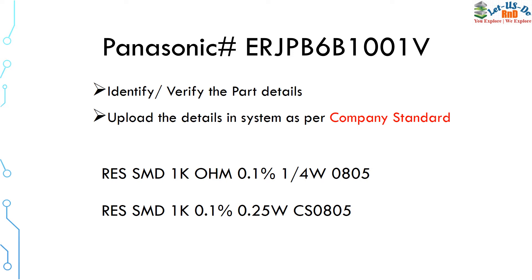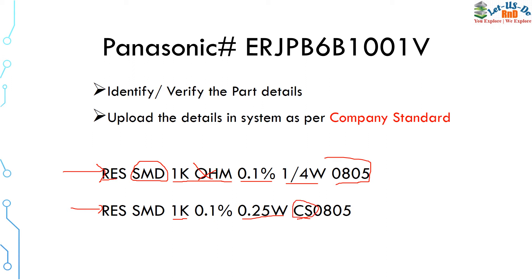The component engineer has to upload verified details into the system as per the company standard. For example, one company format is: RES (stands for resistor), SMD (surface mount device), 1K (resistance value), Ohm (unit), 0.1% (tolerance), 1/4W (power rating), 0805 (chip size). Some companies omit the unit 'Ohm', express power rating as a decimal, and add 'CS' for chip size instead. This format varies from company to company but does not affect the part itself.